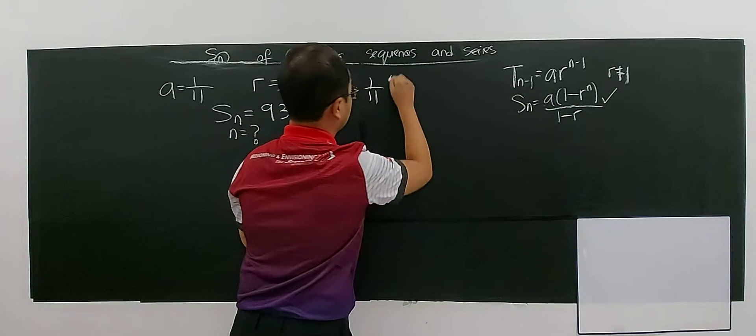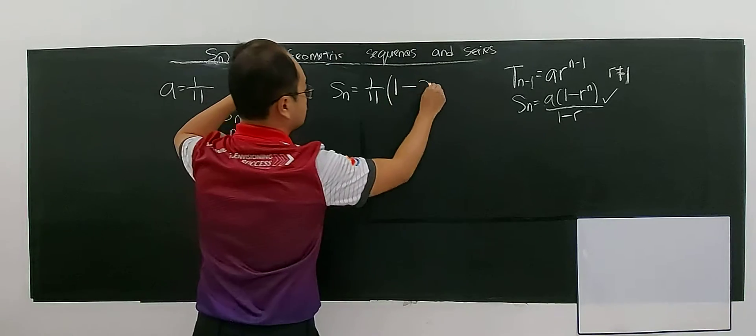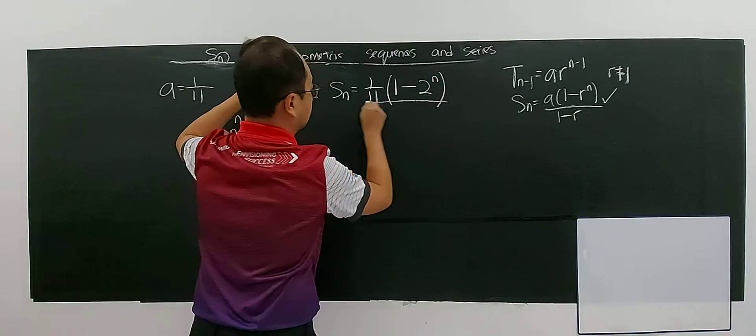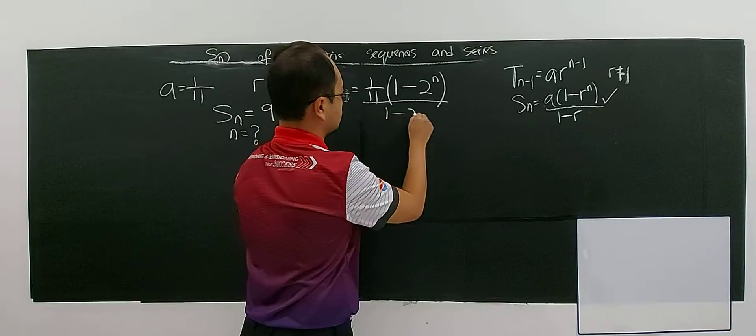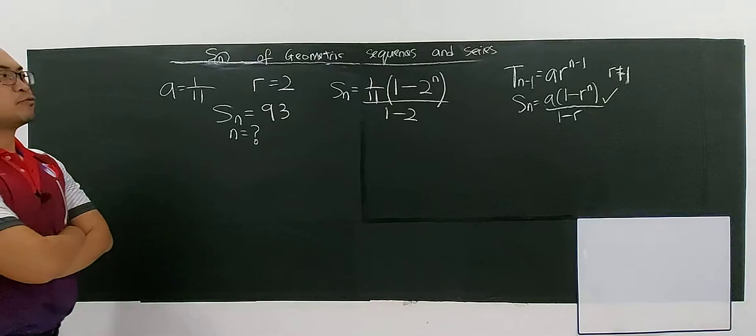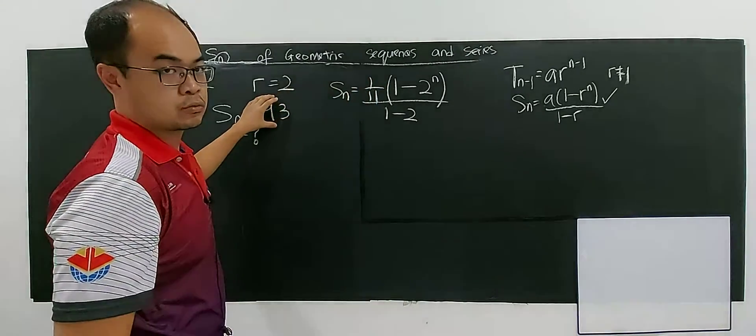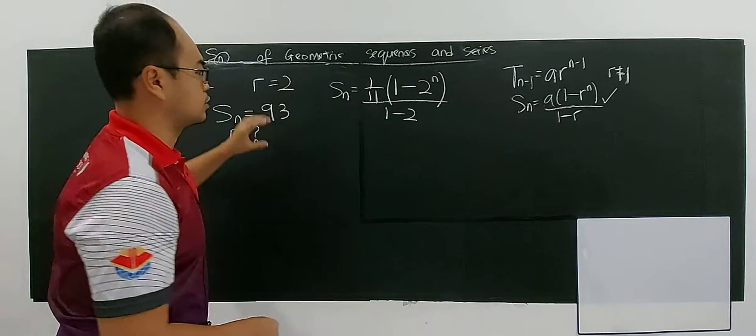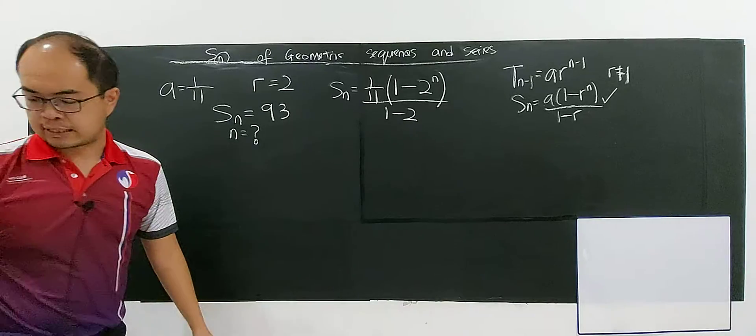And (1 - r to the power of N), 2 to the power of N, divided by (1 - r), 1 minus 2. So this will be your sum of the first N term, and this sum of the first N term, I'm going to equate to 93 to find the value of N. Let's start.